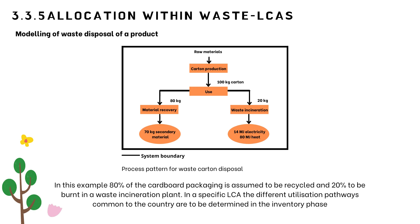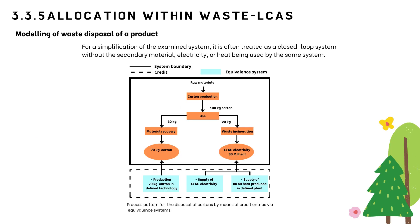Concerning system modeling, there are two variants for what can occur with the 70 kg secondary material, 14 MJ electricity, and 80 MJ heat: they can be used for carton production in the same system (closed-loop recycling) or used in other systems (open-loop recycling). For simplification, the examined system is often treated as a closed-loop system. For evaluation of saved environmental loads, equivalent systems are assessed and treated as credit entries in the examined system, but technical equivalence must be verified carefully.